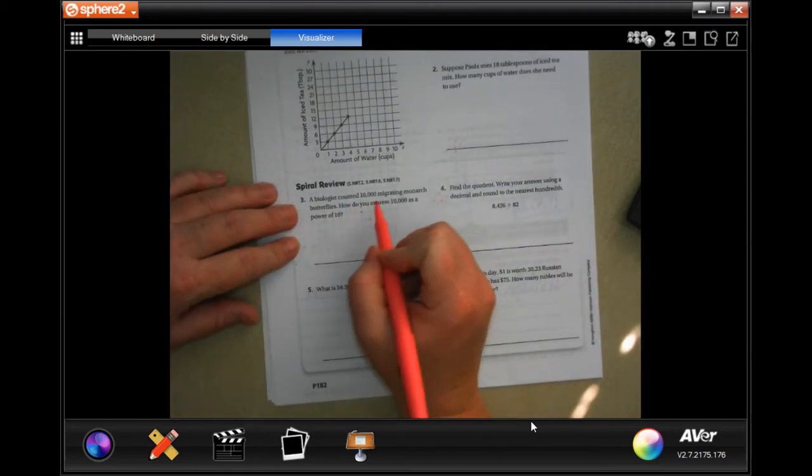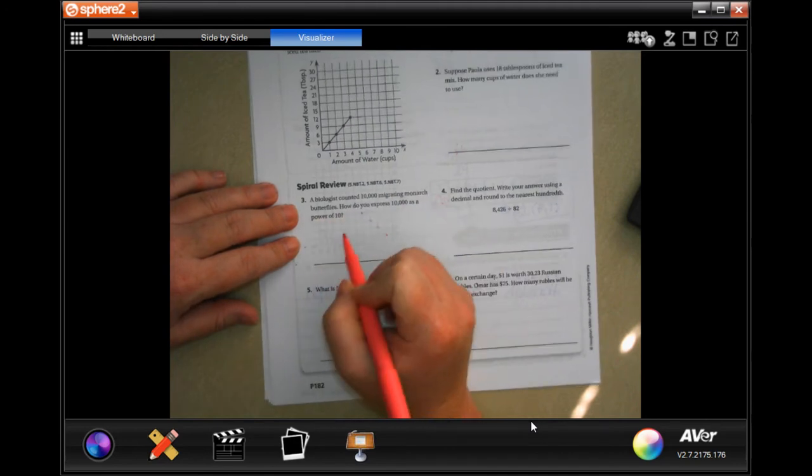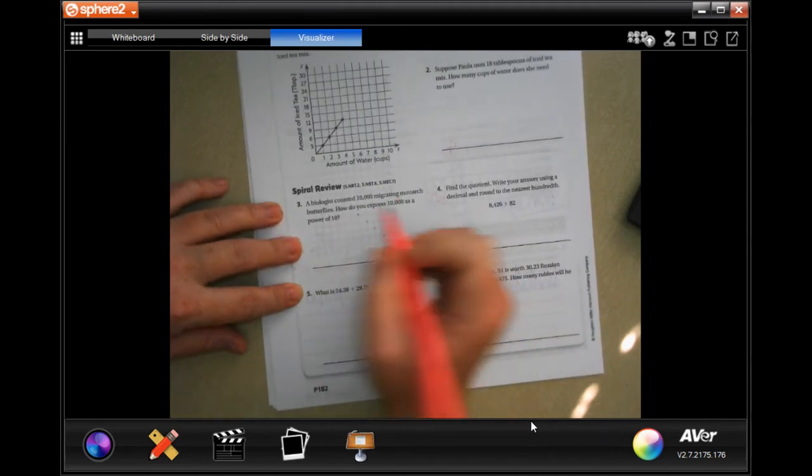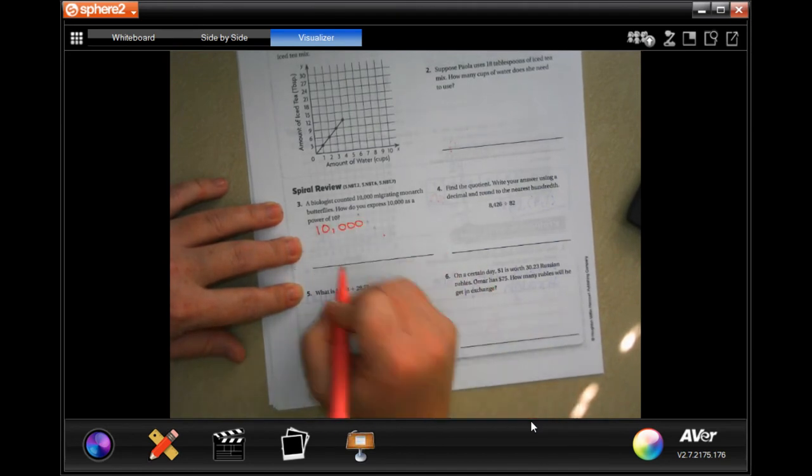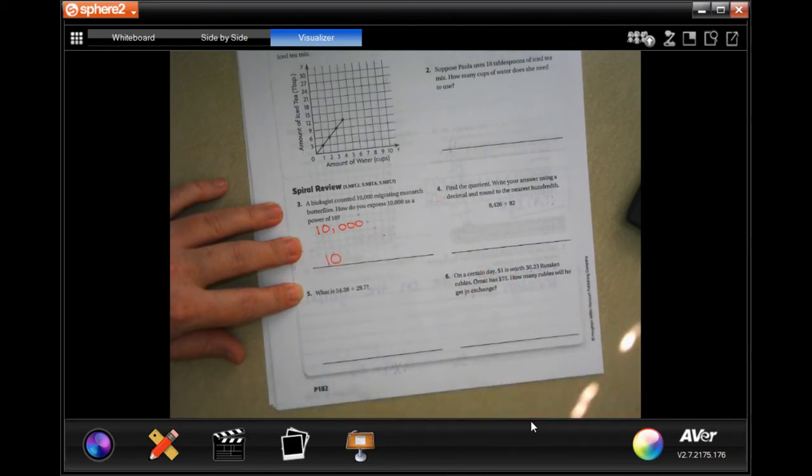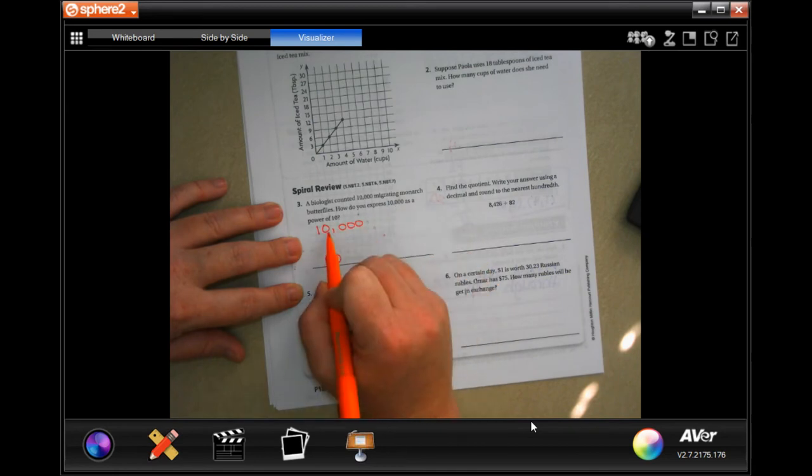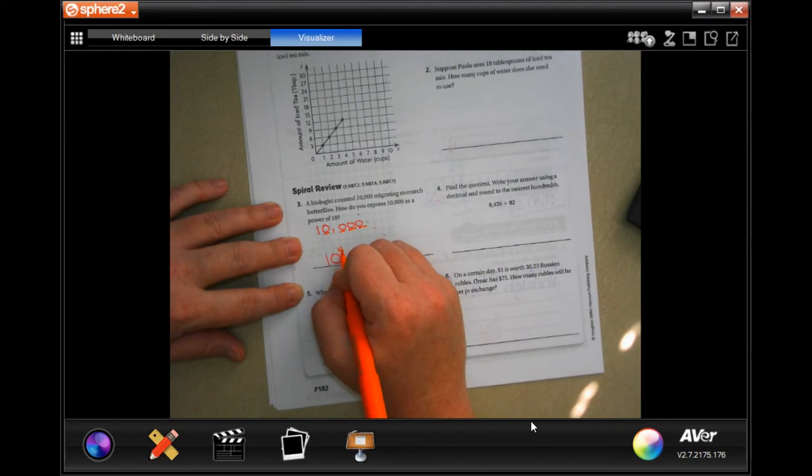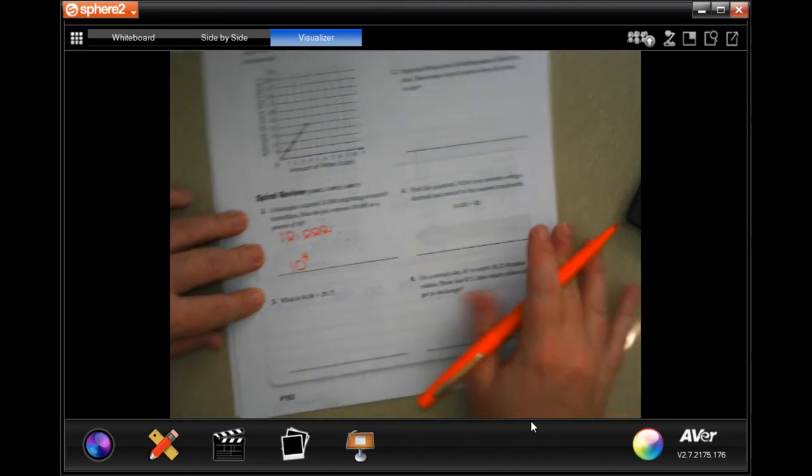A biologist counted ten thousand migrating monarch butterflies. How do you express ten thousand as a power of ten? Well, our base is ten. Now your exponent is going to be how many zeros you have - one, two, three, four - ten to the fourth. You're done.